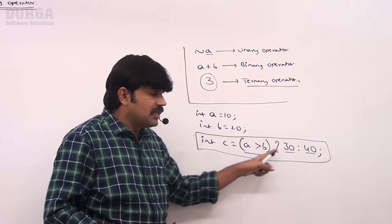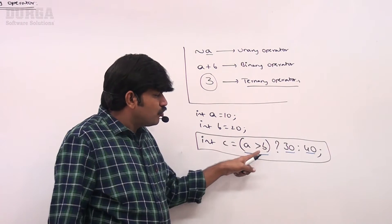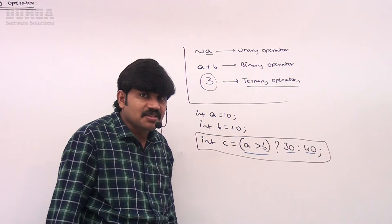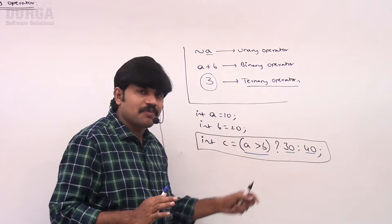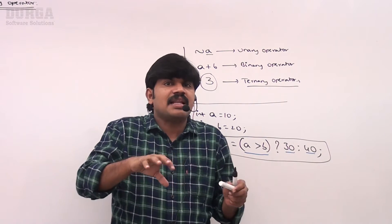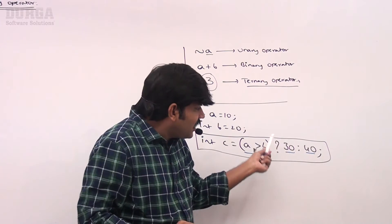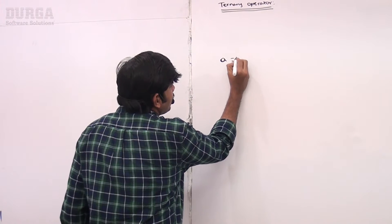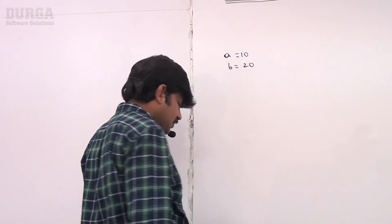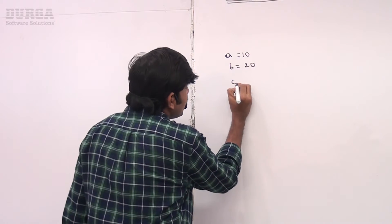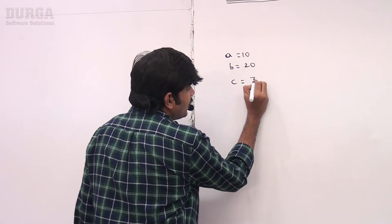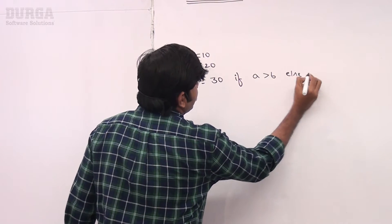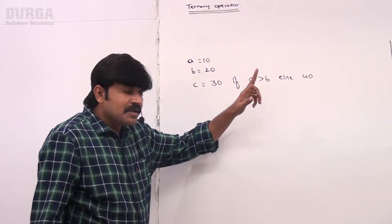In C, C++, and Java, you need the question mark and colon symbols — it's very programming-specific. But in Python, this type of syntax is not used. Python's ternary operator is very user-friendly, just like an English statement. The equivalent Python syntax is: c = 30 if a > b else 40.